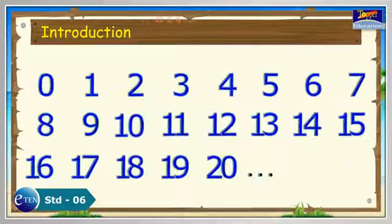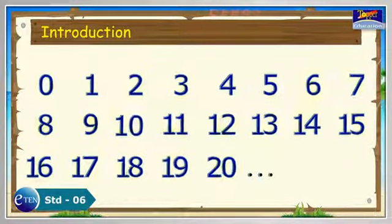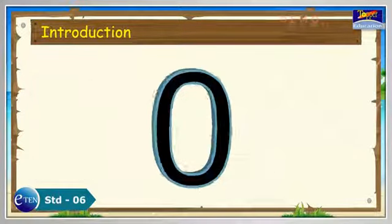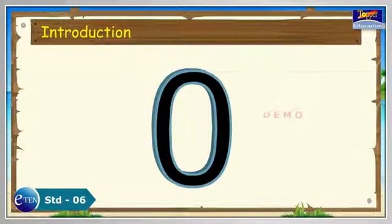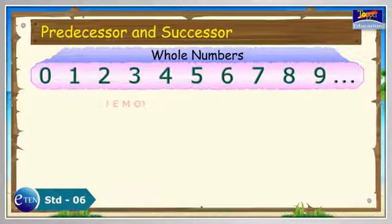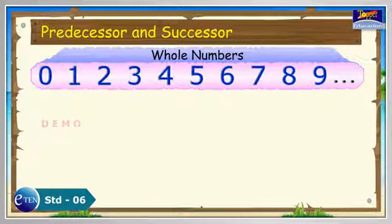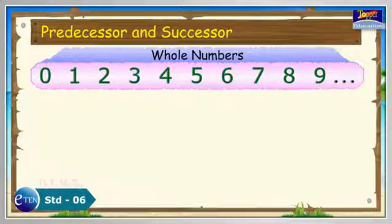Every natural number is a whole number, but 0 is a whole number which is not a natural number. Every whole number has a successor which is also a whole number.